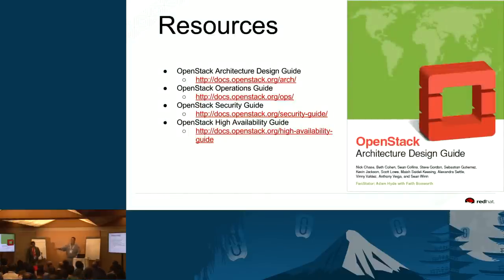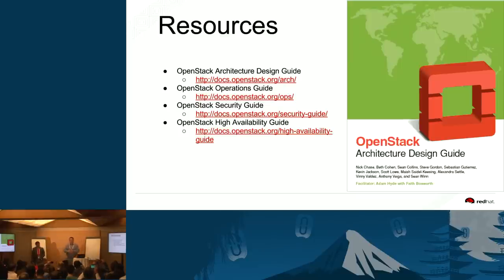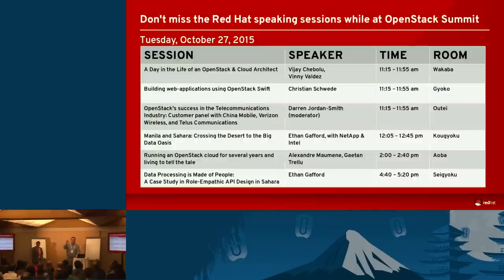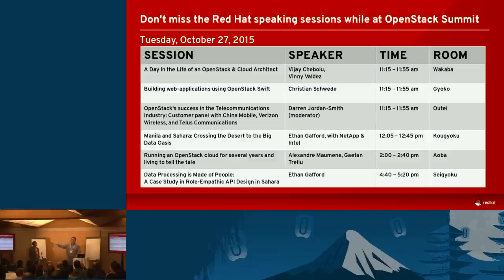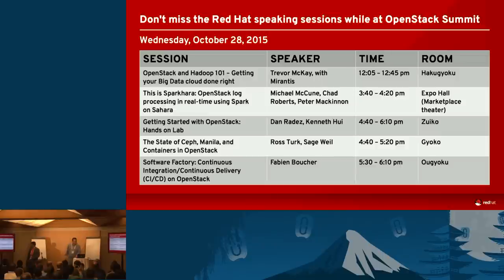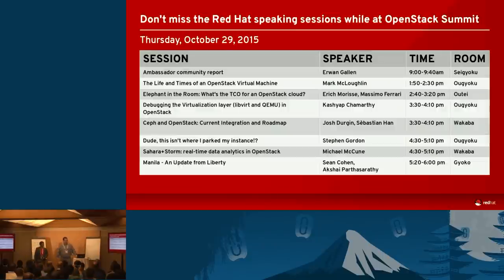There are a lot of great resources available. Some of the architecture diagrams in this presentation came from the OpenStack Architecture Design Guide — written by a group of 13 people in a five-day sprint working about 15 hours a day. There are other guides written in the same manner. We also have a bunch of other Red Hat sessions available at this conference. Thank you all for coming — we appreciate your time.